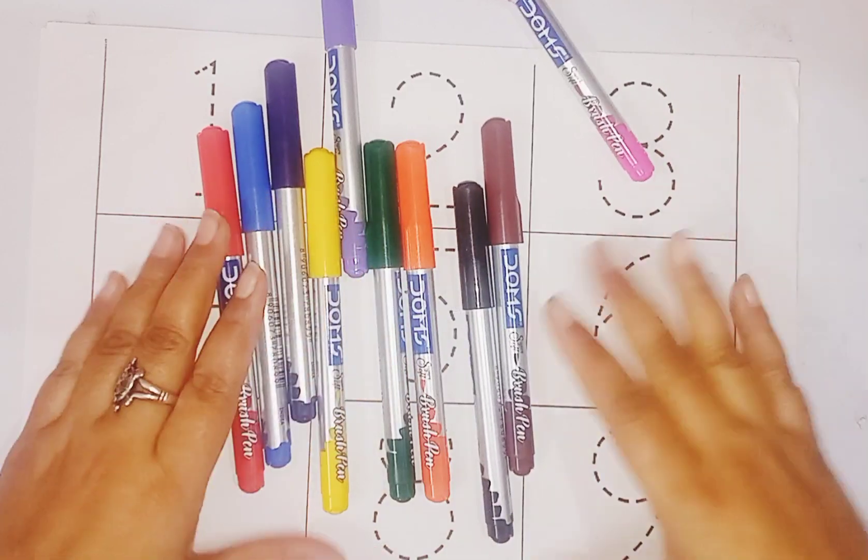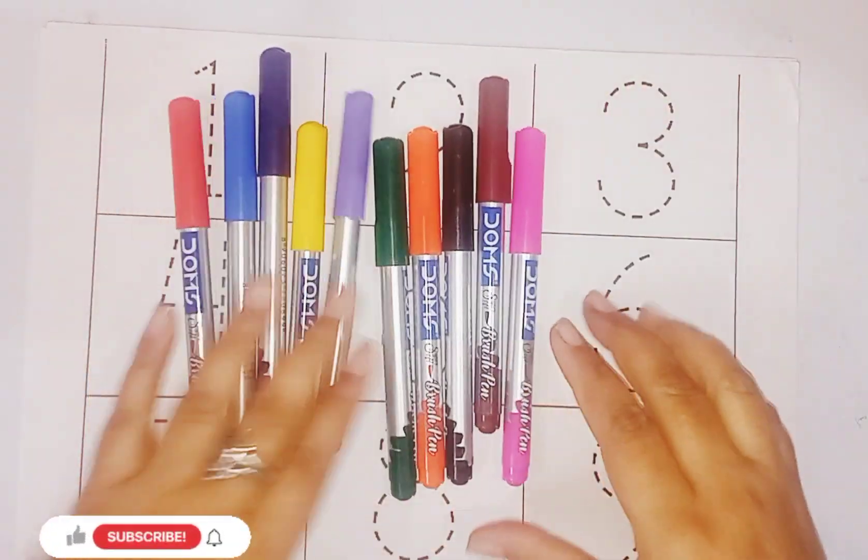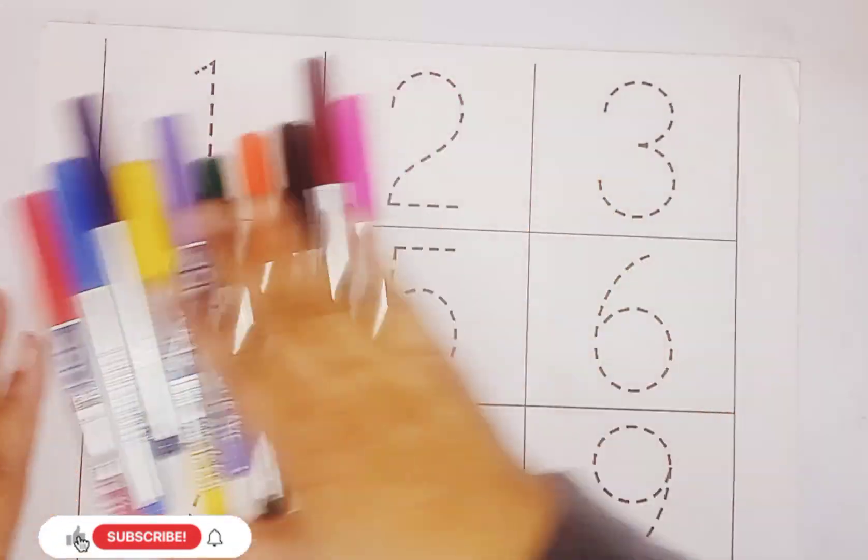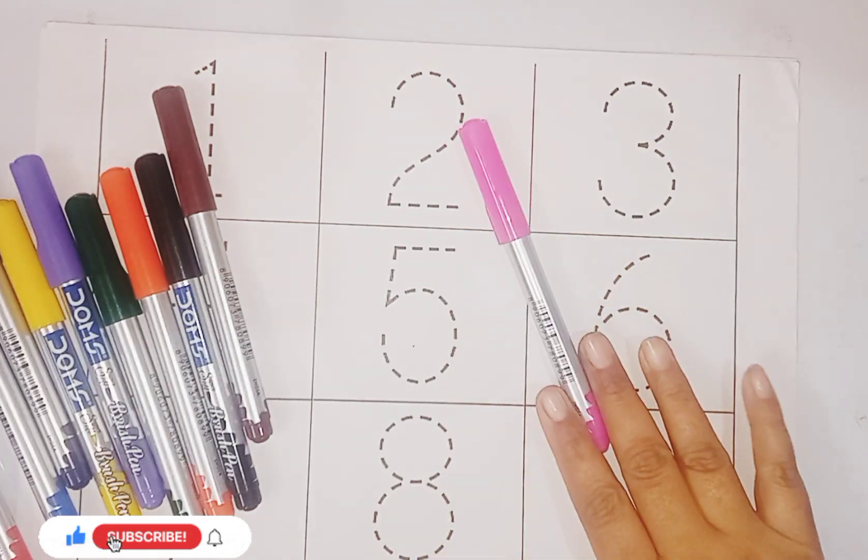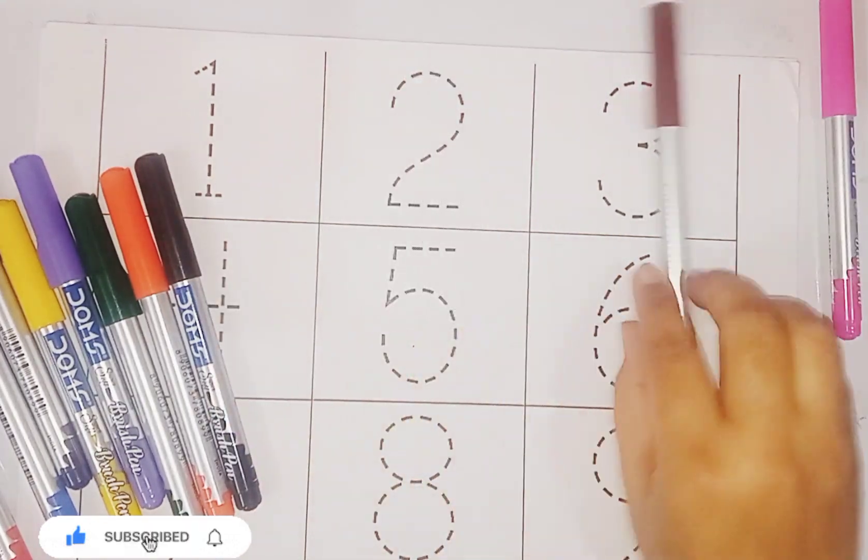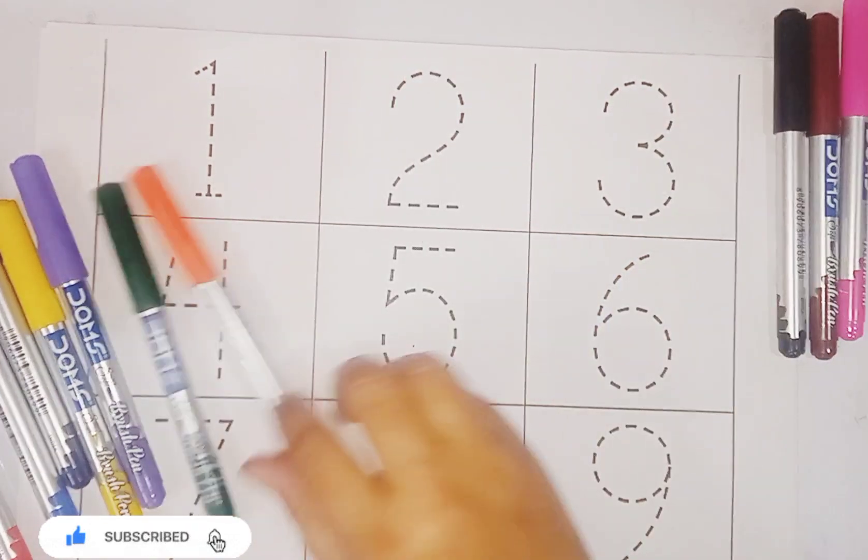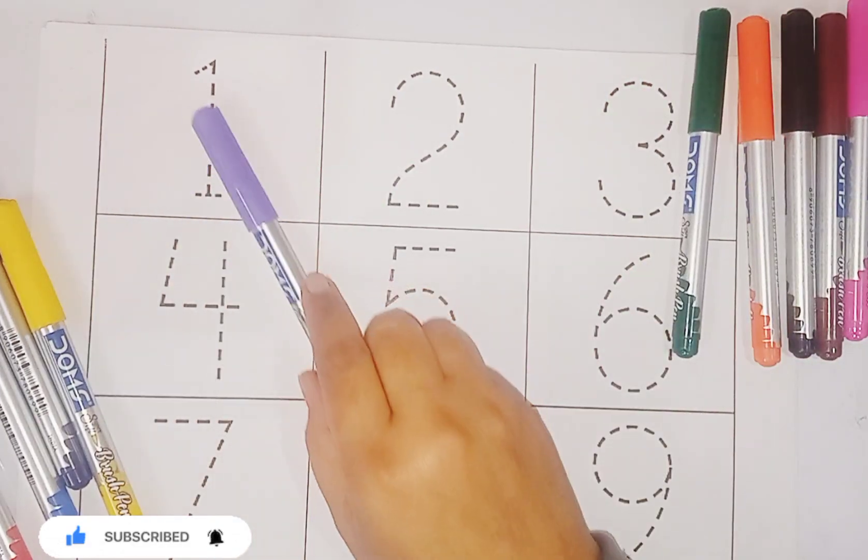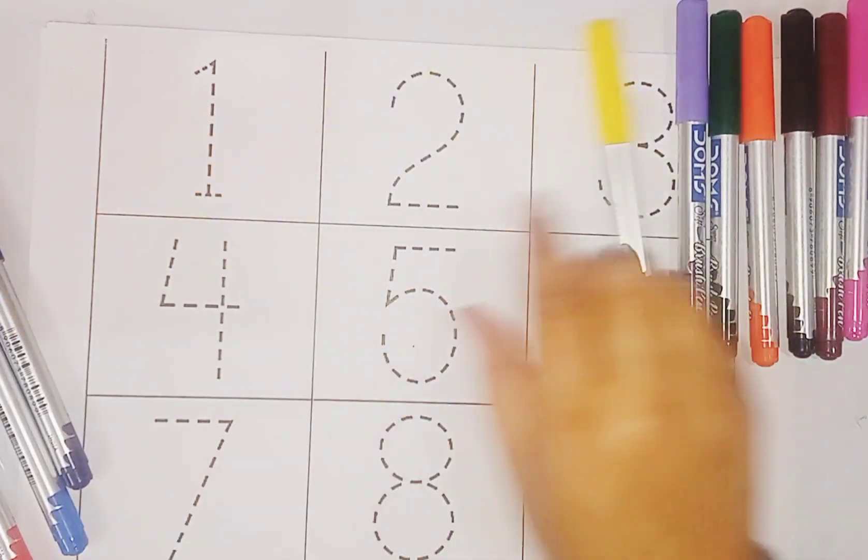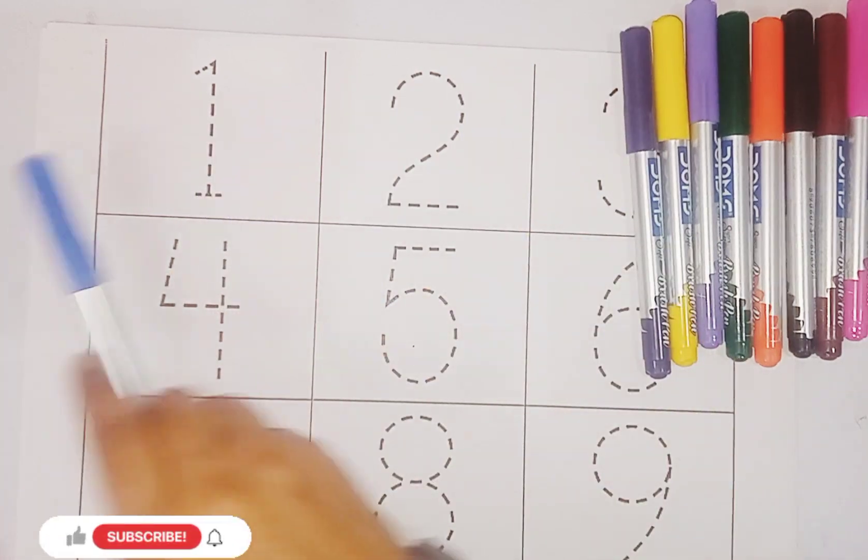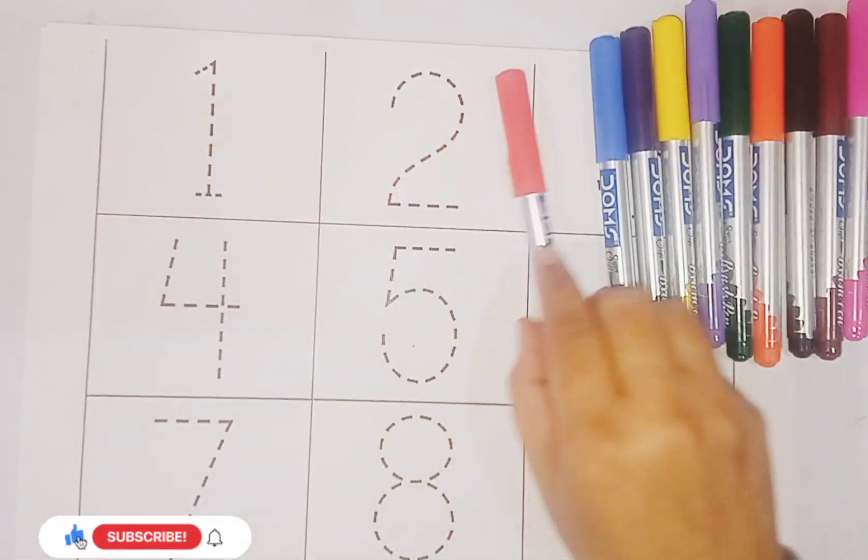These are colors. Cute colors. This is pink color, brown color, black color, orange color, green color, purple color, yellow color, violet color, blue color, red color.